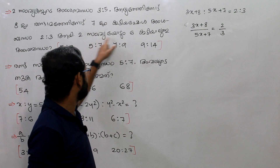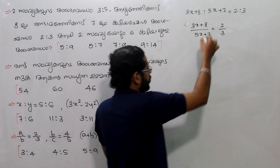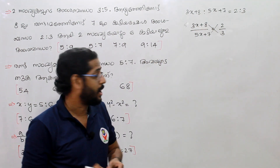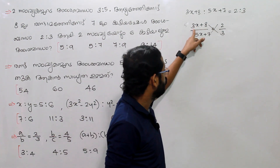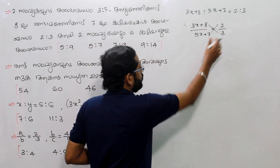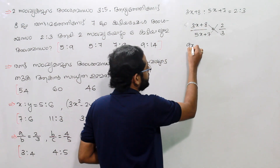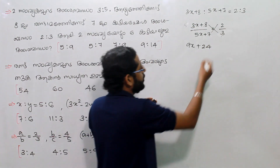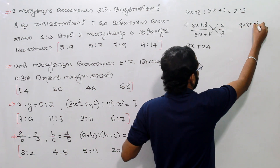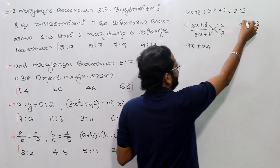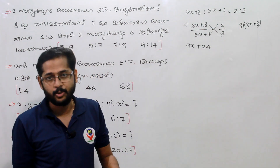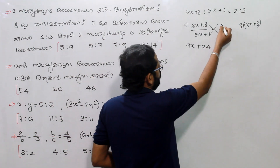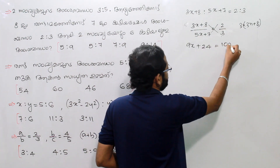16x is equal to 16 plus. We will take a cross. If we take 3 into 3x, that gives us values. 3 into 3x is equal to 1x plus 3x. We will take 3 into 3x plus 8.